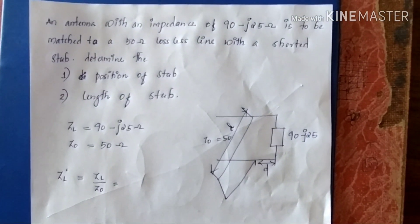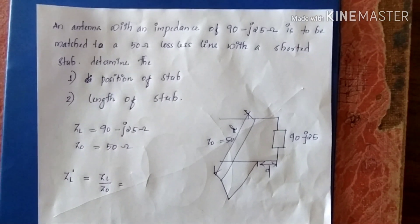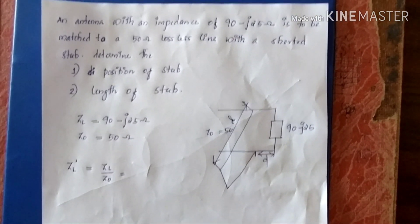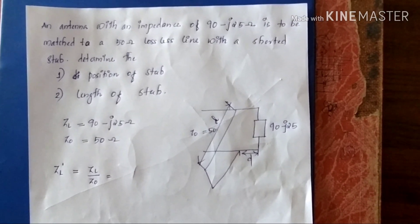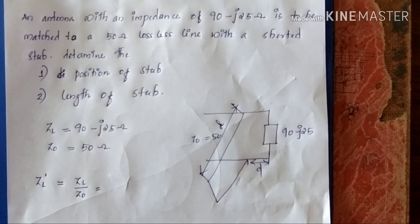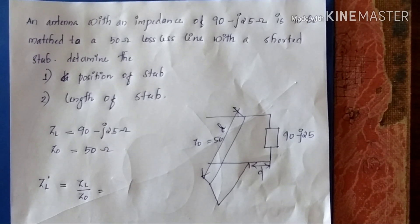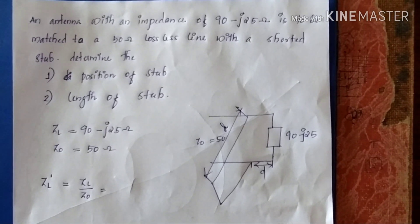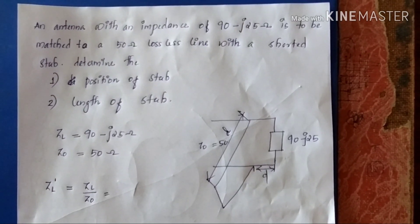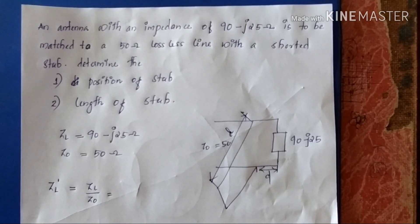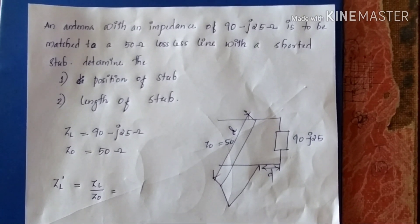We are going to discuss a stub matching graphical method. The basic problem involves a shorted stub. An antenna with an impedance of 90 minus j25 ohm is to be matched to a 50 ohm lossless line with a shorted stub. We need to determine the position of the stub and the length of the stub.